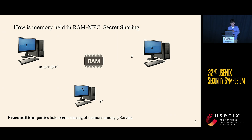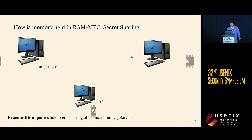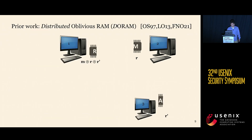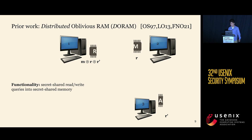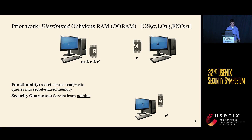This is not the client-server model — we're in RAM MPC. The memory is held via secret sharing: we envision it as secret shared among the parties, which is the prerequisite for RAM MPC. Once we have the memory secret shared, we can define Distributed Oblivious RAM, also known as Doram. Doram is a multi-party protocol where you have a secret shared memory and can perform read and write operations that are themselves secret shared, with the security guarantee that servers learn nothing.